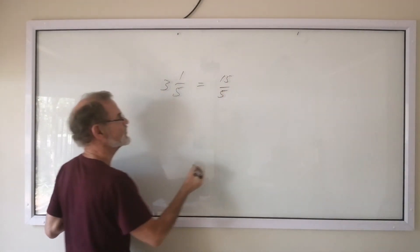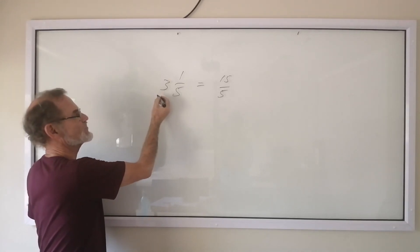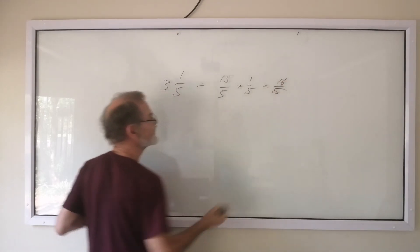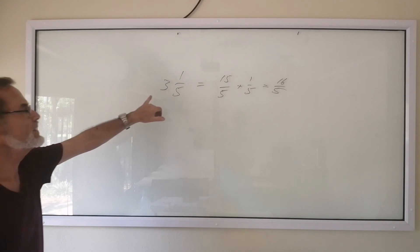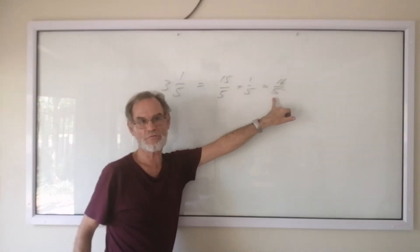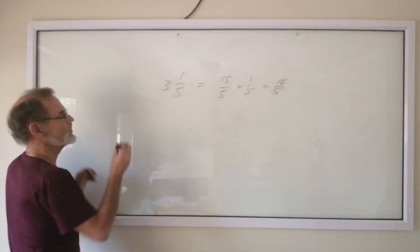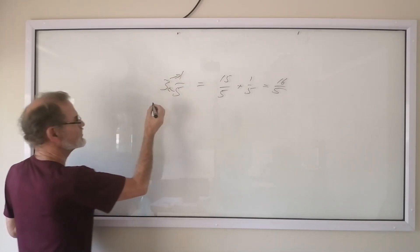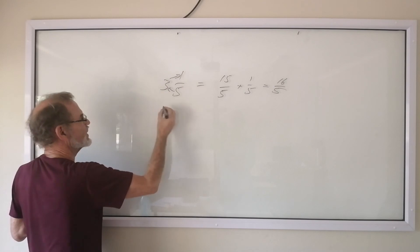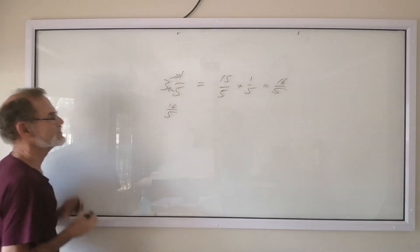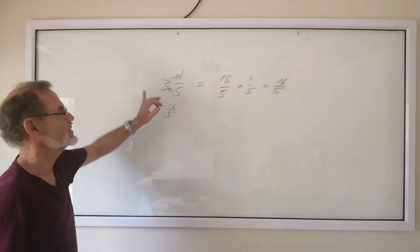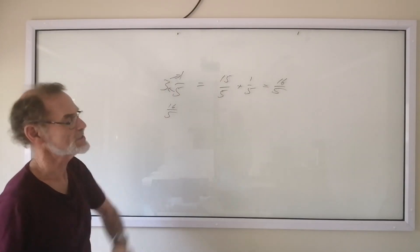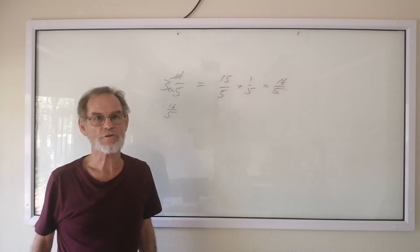15 fifths are in 3. Each one has 5 fifths. And we still got 1/5. That gives us 16/5. That is how you change a mixed number to an improper fraction or top-heavy fraction. Shorthand-wise, you multiply these two and add that one. So if you want to remember the shorthand: 5 times 3 is 15 plus 1, 16/5. So you must make sure that you can change from mixed numbers to improper fractions and from improper fractions to mixed numbers. That will be all for the time being.